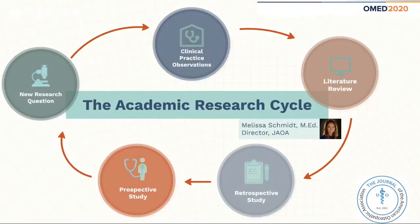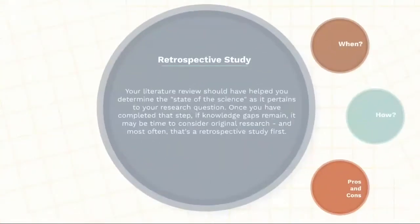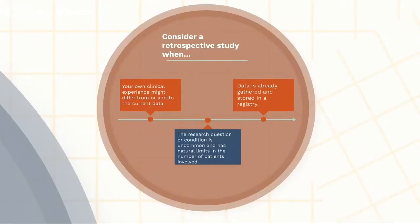Returning to the cycle overview, you can see that you've now completed step two — your literature review. Assuming the existing publications haven't quite answered your question fully, it might be time to consider undertaking your own original study. We'll talk about both retrospective and prospective study designs, starting with retrospective first. They often come first in the cycle. Consider this model when your own clinical experience might differ from or add to the current data, when the research question or condition is uncommon and has natural limits on the number of patients you can recruit or review, and in situations where you might already have data at your fingertips in a registry or repository.